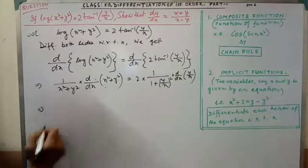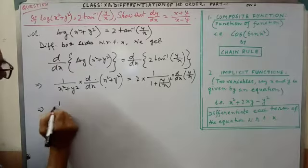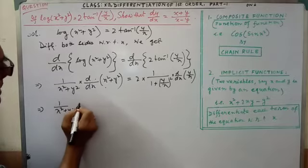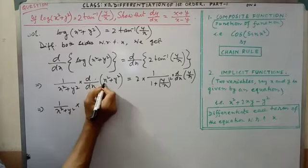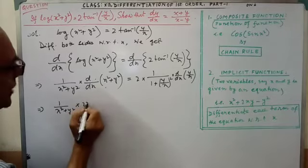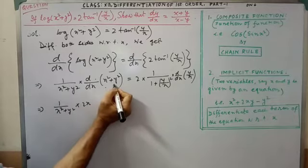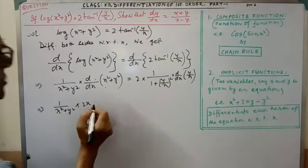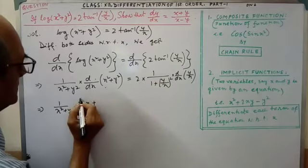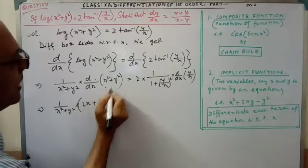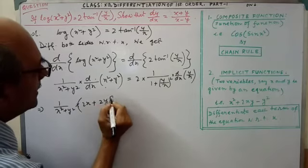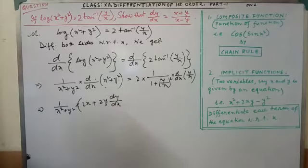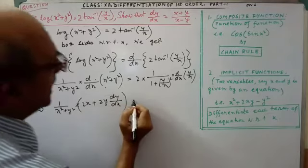Now, see. 1 by x square plus y square. We have to differentiate this. By differentiating x square, that is 2x. And here, the implicit function. We have to differentiate with respect to x. This is why it will come 2y dy by dx. With respect to x.